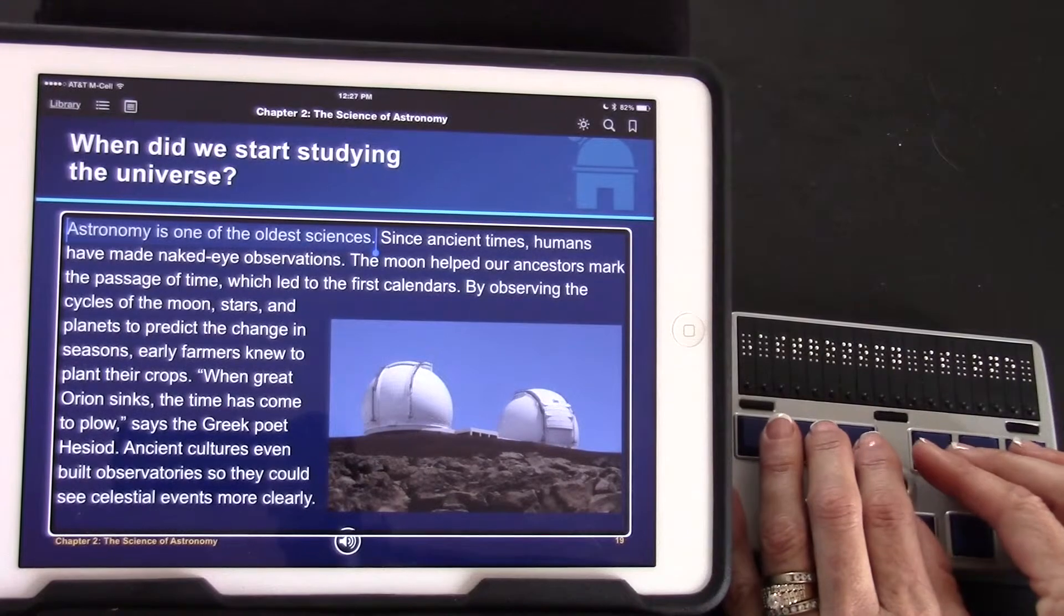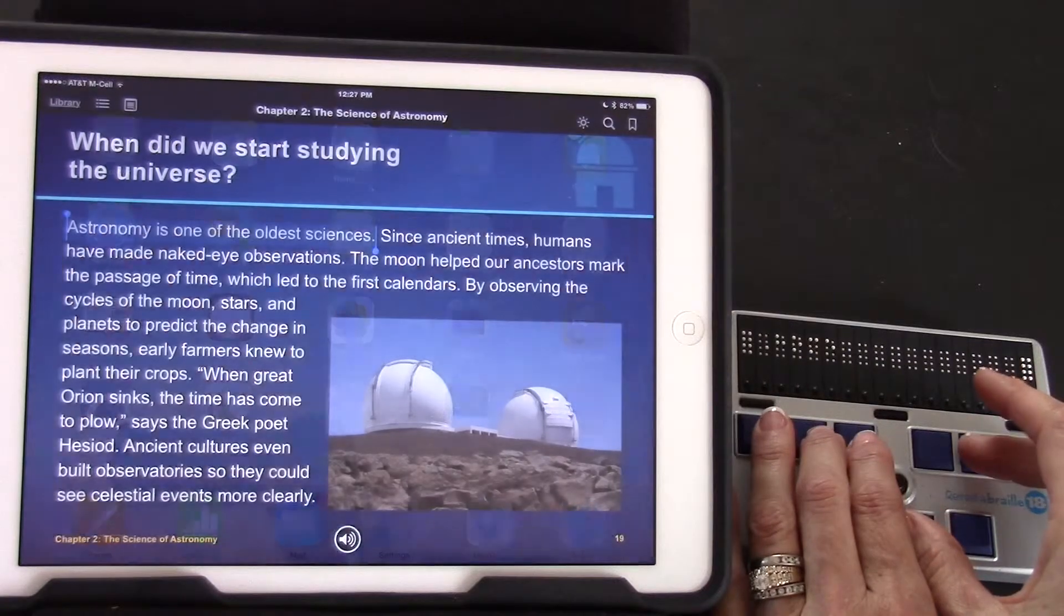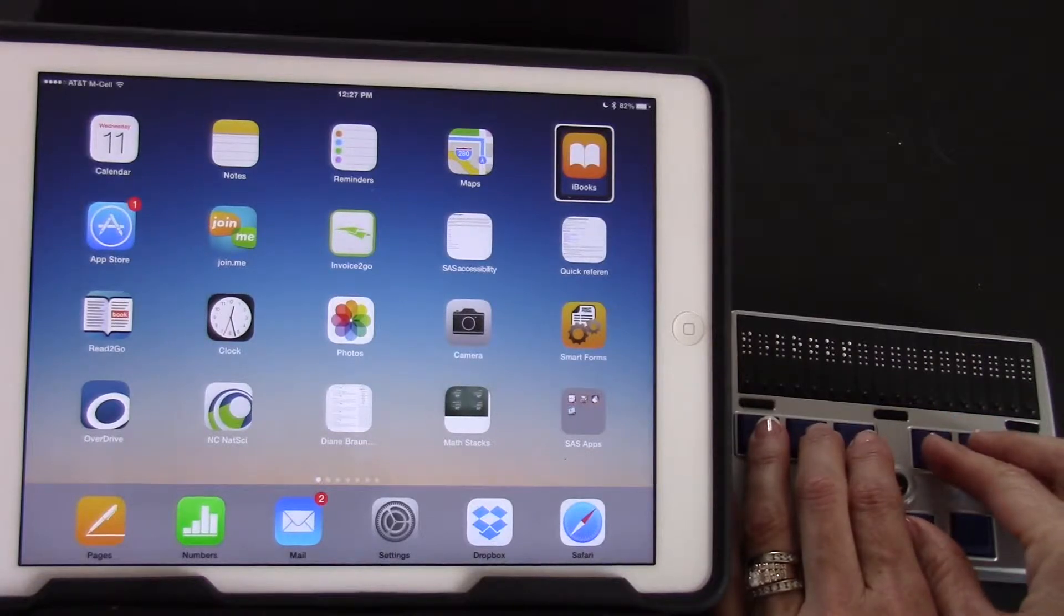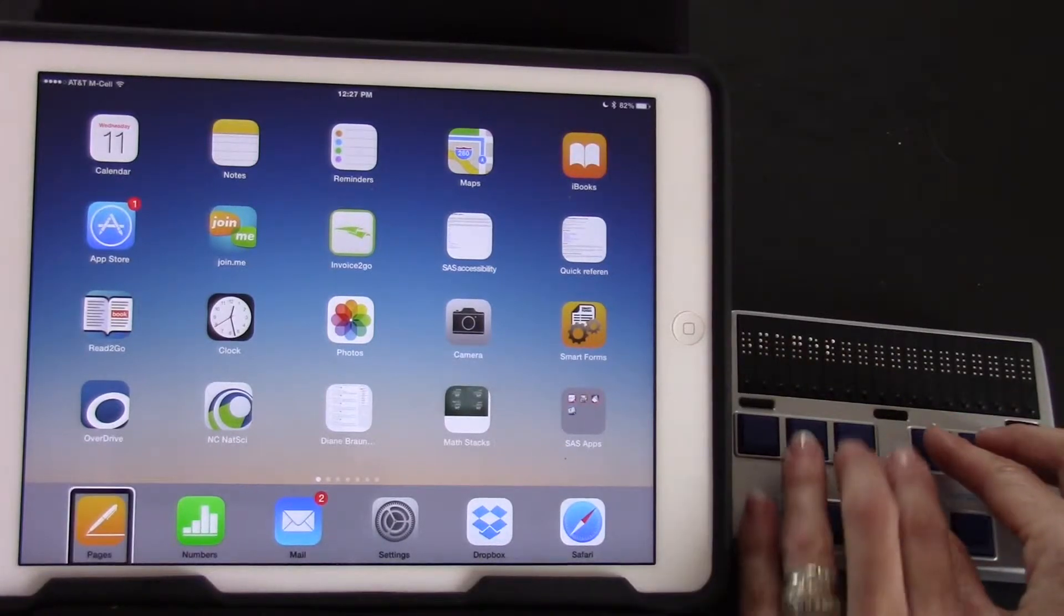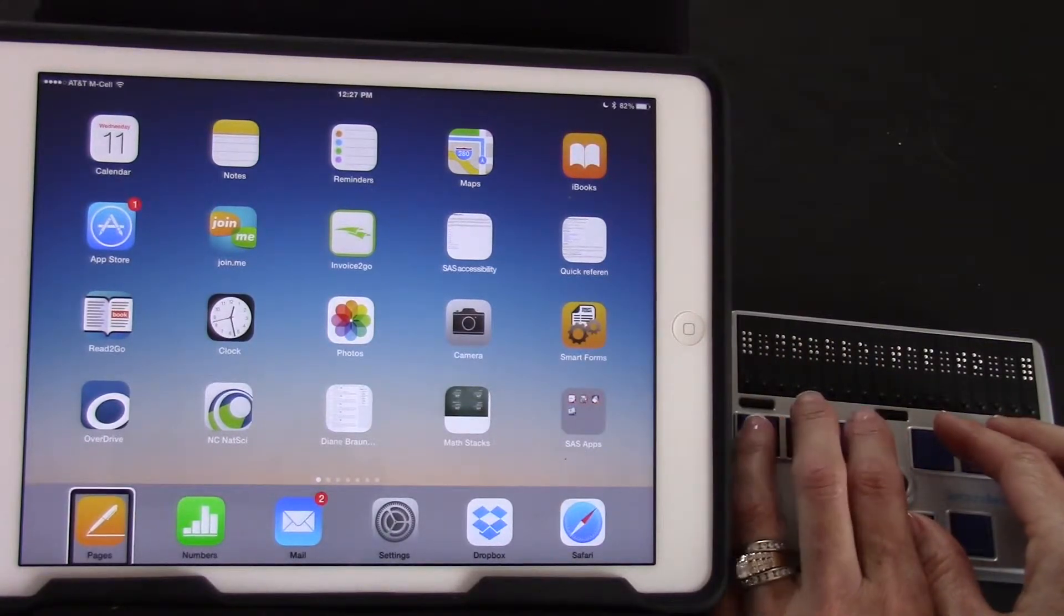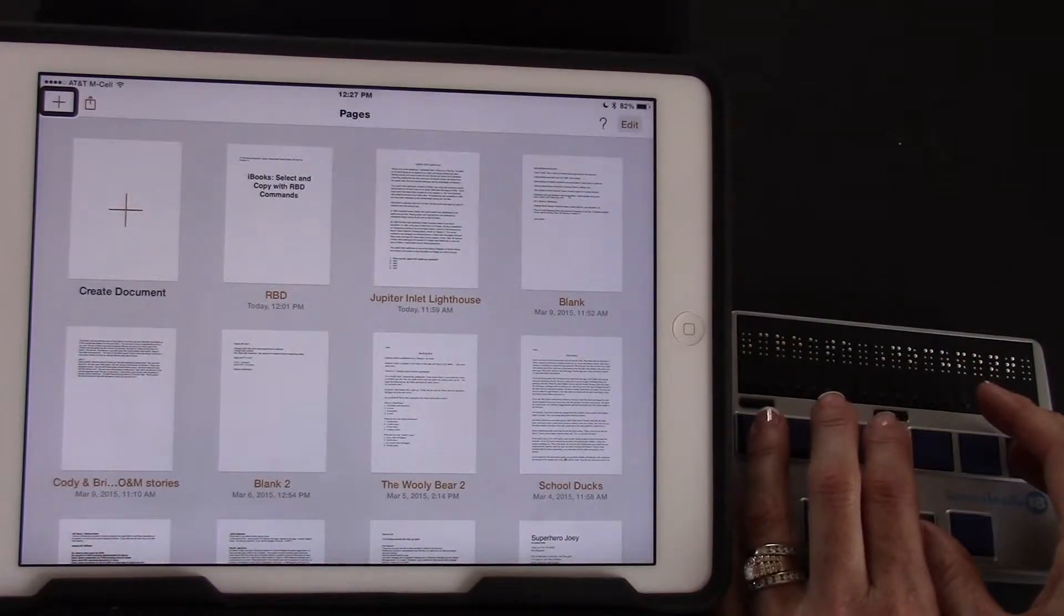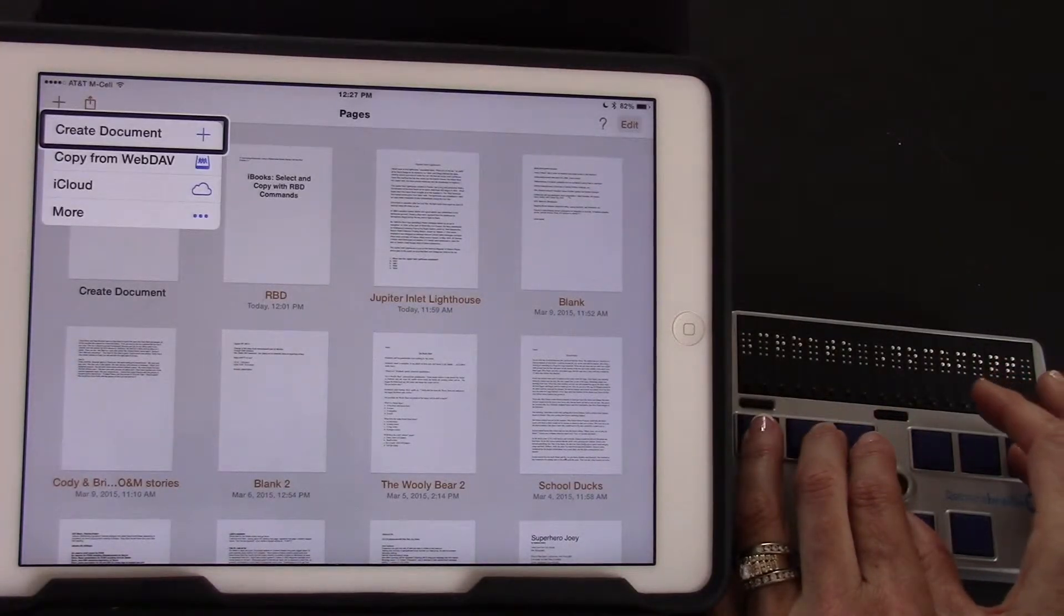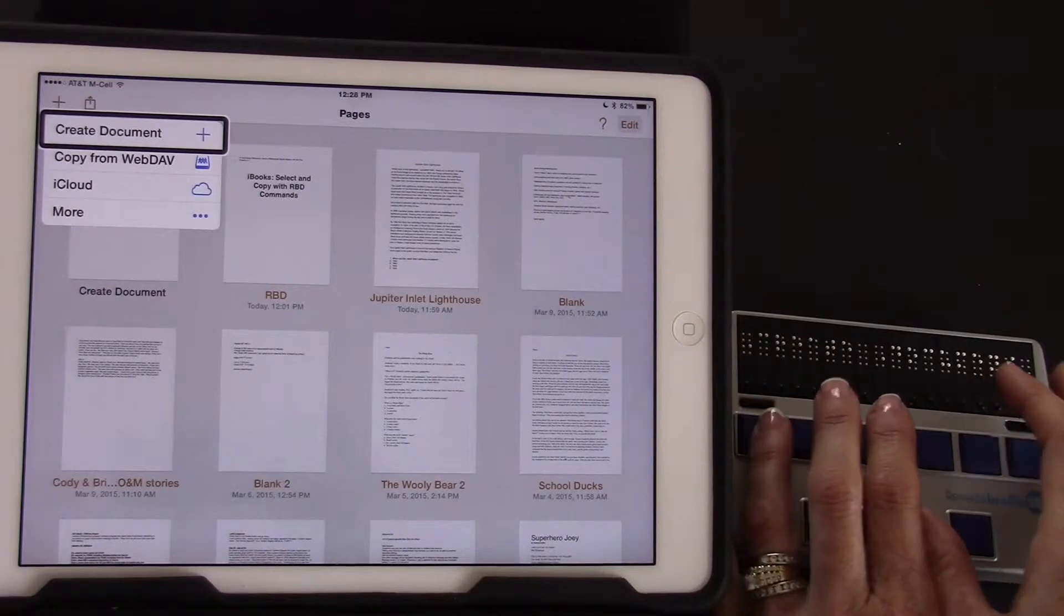Alright now I'm going to paste that sentence into a pages document. Go back to the home screen using H chord. I'm going to jump to the next container the bottom left to where pages is using four seven space. I'm going to open with a three six space. I heard create documents. I'm going to open that three six space. Create document. Pages. I heard the little bloop bloop sound saying that there's a pop-up and then create document. I'm going to select that three six space.